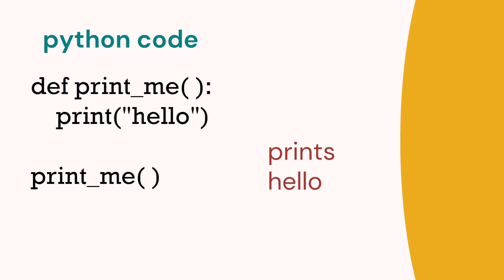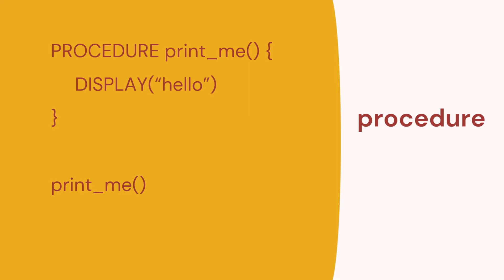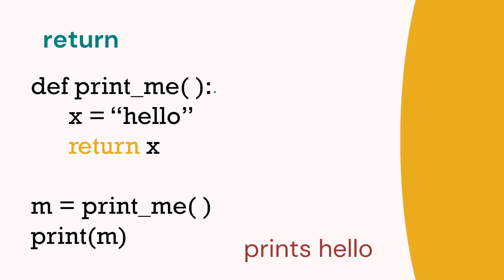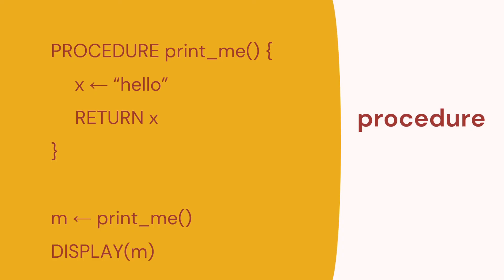These are examples in Python, so we call them functions, but in pseudocode they're called procedures. Let's look at them in pseudocode. We've got the Python code of a simple function alongside the pseudocode equivalent. In pseudocode we use the keyword PROCEDURE, then the procedure name, round brackets, curly brackets, and the code inside. The procedure is called with the procedure name and brackets — very similar to Python. When passing a parameter or returning a value, we use the word RETURN in pseudocode. So the pseudocode is quite similar but uses PROCEDURE rather than DEF.